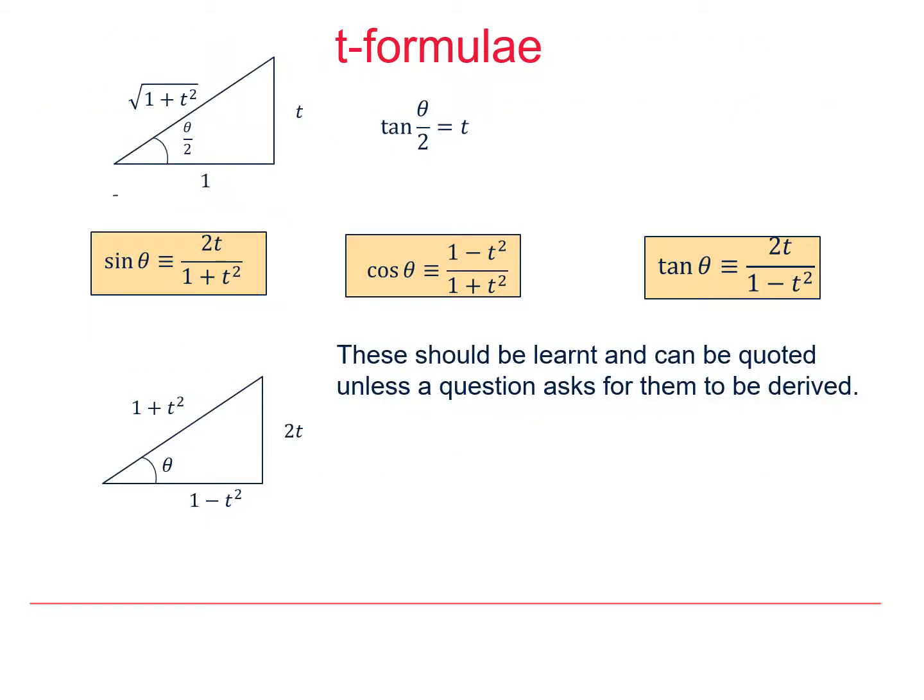So here we have a little right angle triangle with θ/2 as the acute angle to allow us to work out the values in terms of t for sin θ, cos θ and tan θ. But we can now set up a second right angle triangle, and this time we end up using θ as our acute angle.